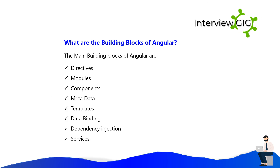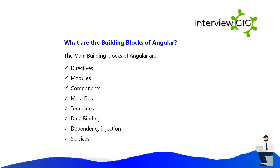What are the building blocks of Angular? The main building blocks of Angular are: Directives, Modules, Components, Metadata, Templates, Data Binding, Dependency Injection, and Services.